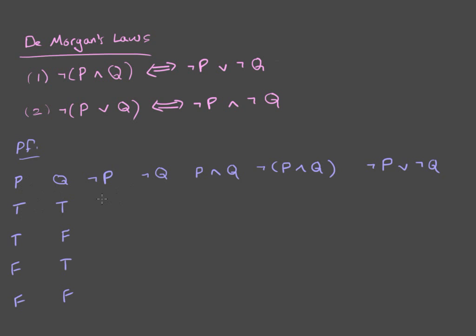So, if P is true, NOT P is false. If Q is true, NOT Q is false. If P and Q are both true, P AND Q is true. And therefore, its negation is false. Since neither NOT P nor NOT Q is true, this is false. All right, so we're off to a good start because this and this have the same truth value.